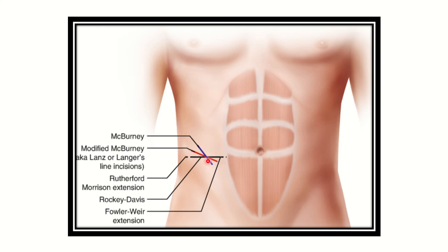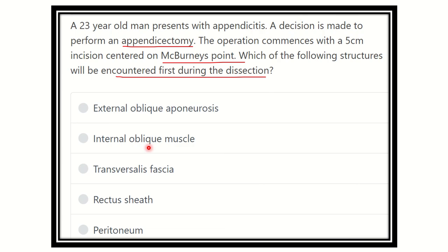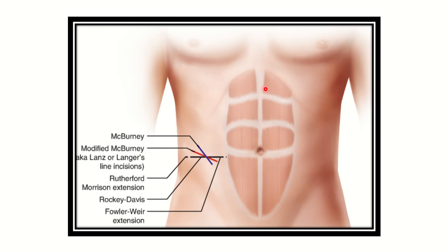Here you can see McBurney's point and the transverse incision made there. A 5-centimeter incision is made through McBurney's point. This is the normal McBurney's point incision, this is the modified version, and finally here we can see the Rutherford Morrison incision.